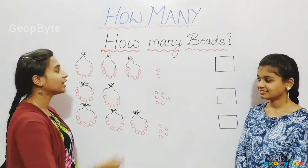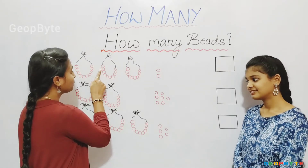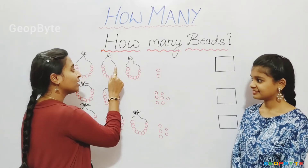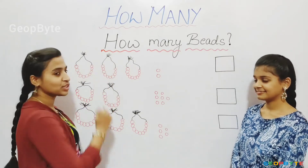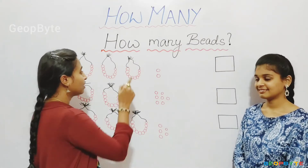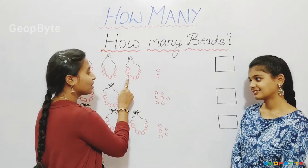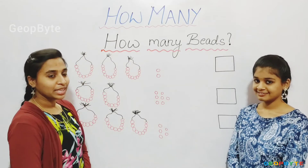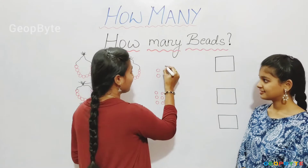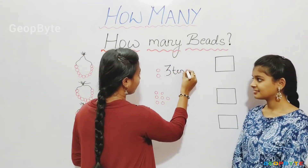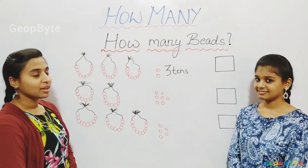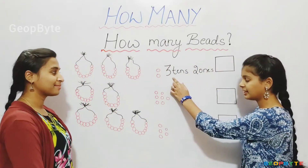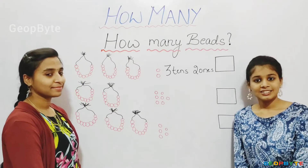Let us count how many beads are there in this string. One, two, three, four, five, six, seven, eight, nine, ten. One, two, three, four, five, six, seven, eight, nine, ten. Ten beads in this string also. So let us write — we have ten beads of three strings. Two beads, that is two ones. Three, two — thirty-two. Let us write thirty-two in the box.